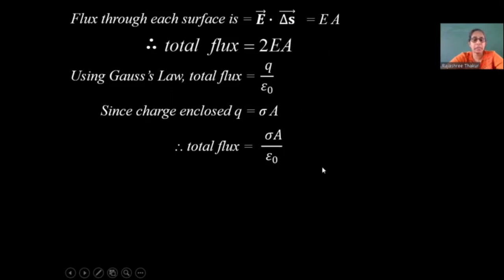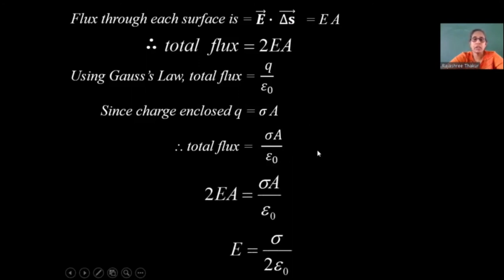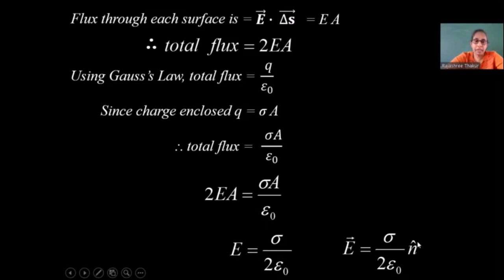We can equate both expressions: 2EA equals sigma A upon epsilon 0. Hence E equals sigma upon 2 epsilon 0. In vector form, vector E equals sigma upon 2 epsilon 0 times the unit vector N, which is in the direction perpendicular to the plane of the sheet.